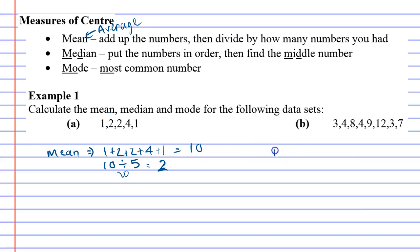So let's find the mean for question B. So first we'll add our numbers up. 3 plus 4 plus 8 plus 4 plus 9 plus 12 plus 3 plus 7. Let's work that out a little bit. 15, 14, 12 plus 3 plus 7. I got 50. Oh, that's a nice whole number. So when you add them up, you get 50.